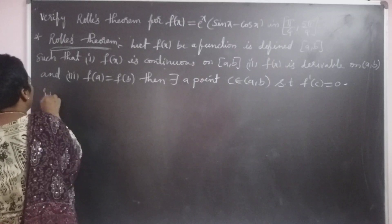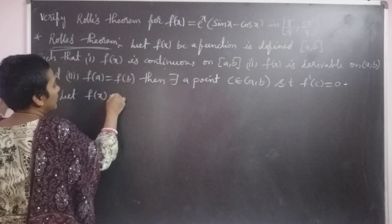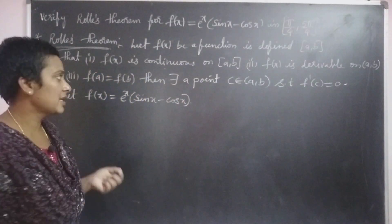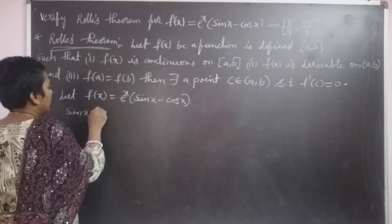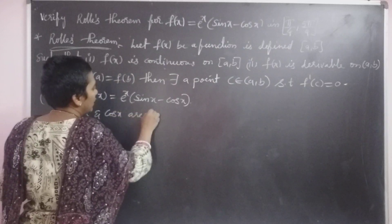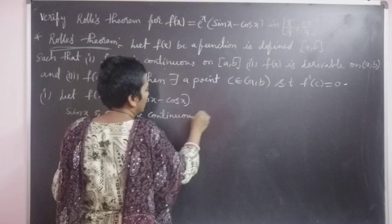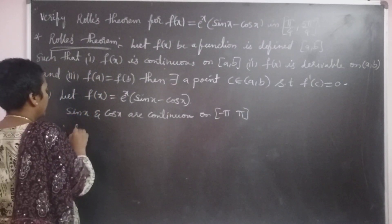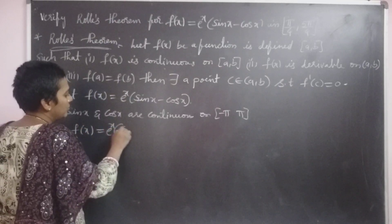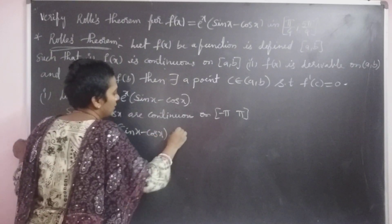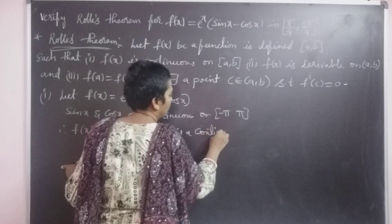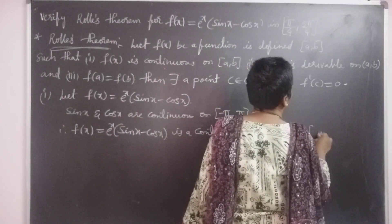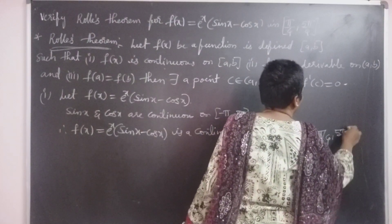Now we can check the first condition. Let f of x equal to e power x into sin x minus cos x. We know that sin x and cos x both are continuous. Cos x is continuous on closed interval minus pi comma pi, and e power x is also continuous for all x. Therefore, f of x equal to e power x into sin x minus cos x is a continuous function on closed interval pi by 4 comma 5 pi by 4.